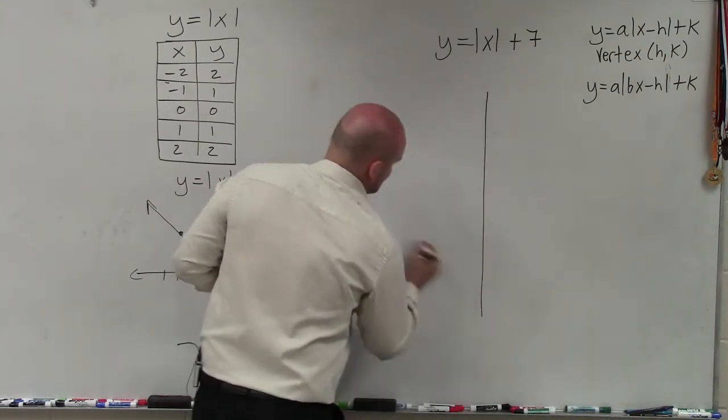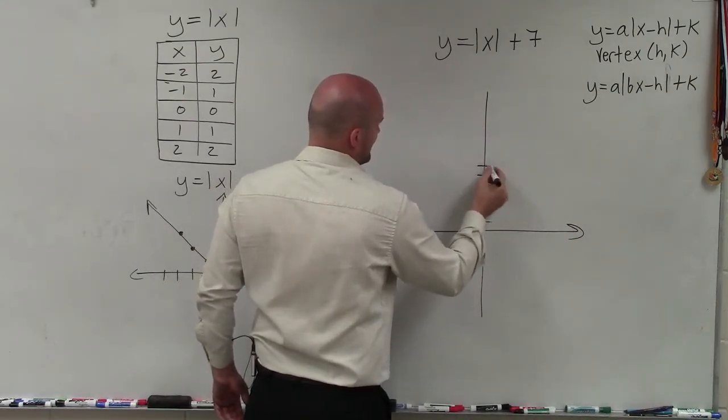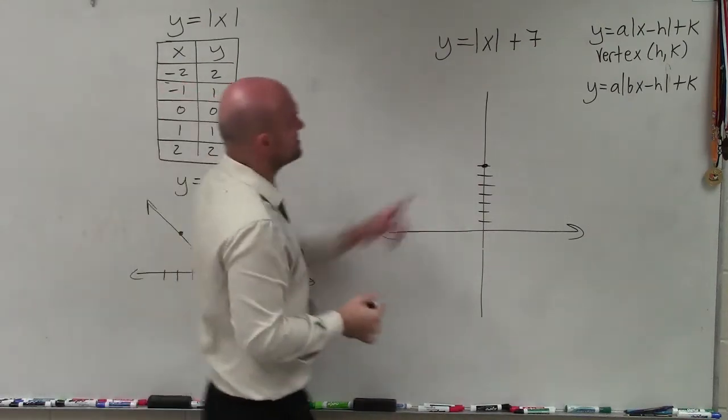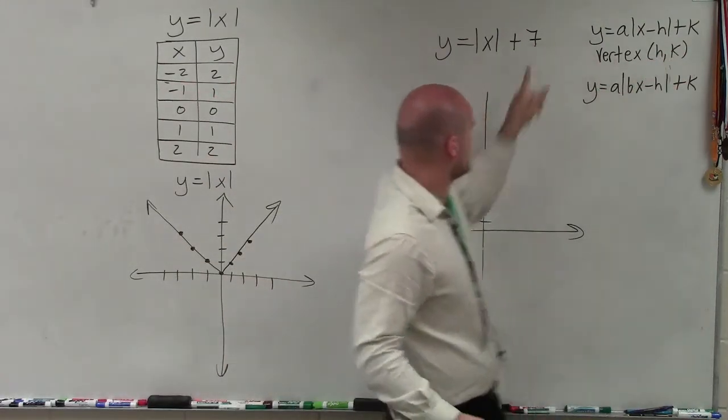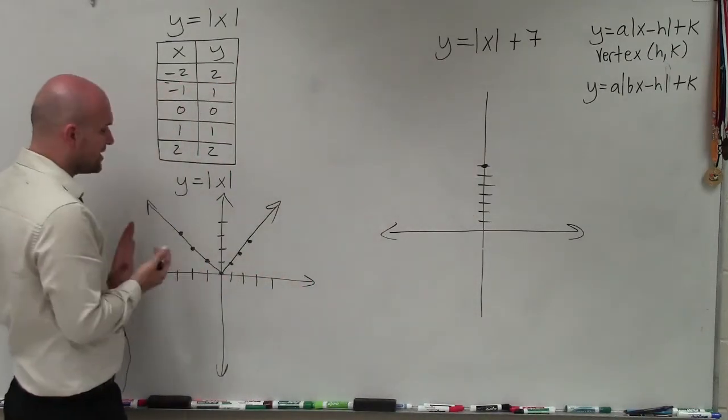So what I'll basically do is I'll go up 1, 2, 3, 4, 5, 6, 7. Instead of being at (0, 0), it's now at (0, 7), because that's what the k does. So now my vertex is at (0, 7), but my graph has not been compressed or stretched at all.